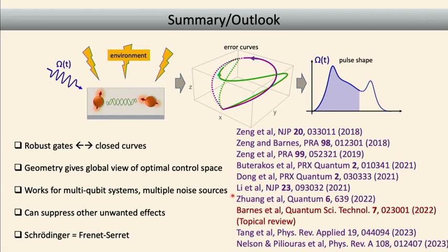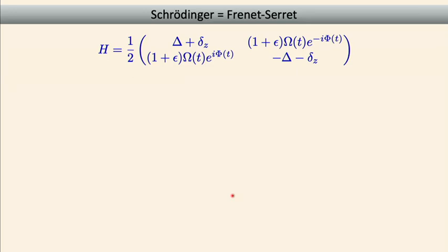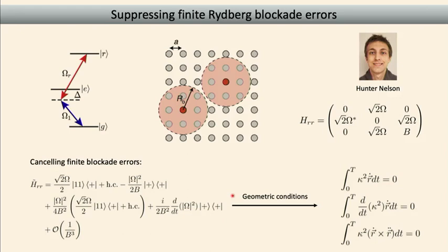Question: For two-qubit gates on hardware, we usually need auxiliary levels rather than a pure two-spin interaction. How does this method apply? Response: The Rydberg example is precisely a case where the two-qubit gate is facilitated by an auxiliary Rydberg level. If you focus on the relevant subspace spanned by the one-one state and the one-R plus R-one state, ignoring the RR state, you have a three-level system. The goal is to eliminate coupling to the RR state, leaving a two-level subspace — the one-one and one-R plus R-one — which is exactly the structure used to design the space curves, translating to a 3D curve.